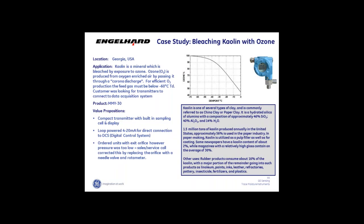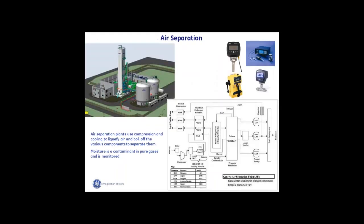Another big application for us is air separation, where we can get pure gases — mainly nitrogen, argon, and oxygen — from separating them out of air. Air is a mixture of gases, and this is sort of the reverse of distillation. In distillation we start with a liquid, heat it, and separate components at different temperatures. Here we start with gases and as we chill them down to very low temperatures, nitrogen, argon, oxygen, and CO2 separate at different temperatures. We have to make sure we remove all of the water, or ice will form on our cold box or in our cryogenic heat exchanger.